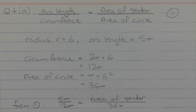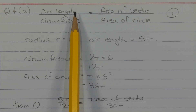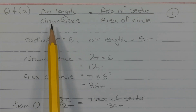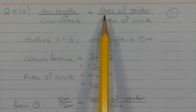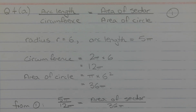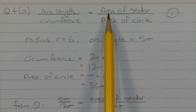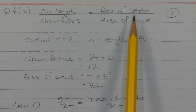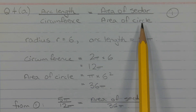Given a sector and a circle of identical radius, the ratio of the arc length of the sector to the circumference of the circle is equal to the ratio of the area of the sector to the area of the circle. We can express this as an equation involving two fractions: arc length over circumference equals area of sector over area of circle. We'll call this equation number one.